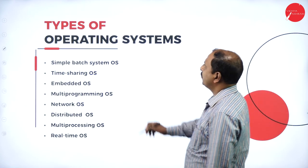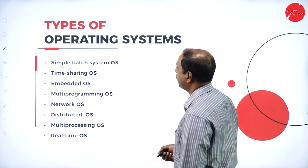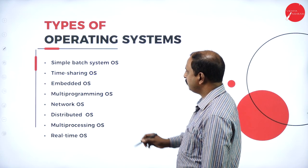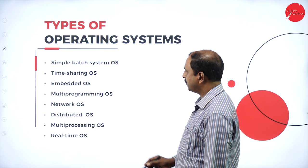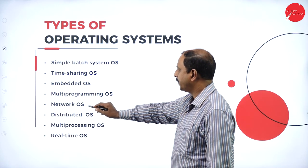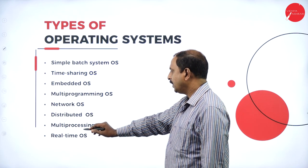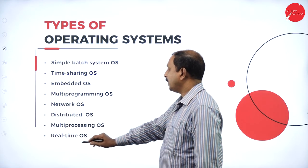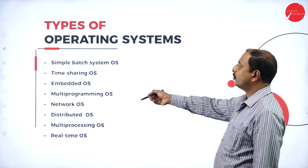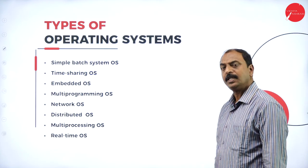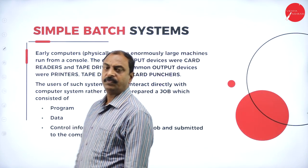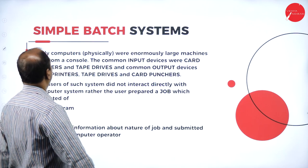There are different types of operating systems: simple batch system, time sharing, embedded, multi-programming, network, distributed, multi-processing, and real-time operating systems. These are the types we use in our day-to-day life. Let us learn their definitions one by one.